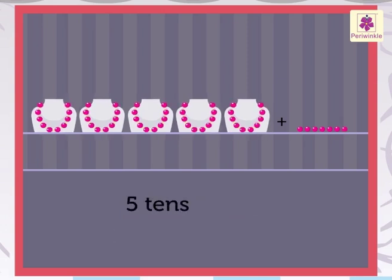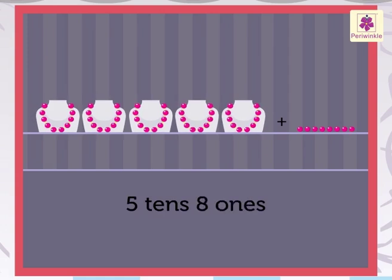Five tens and eight ones is 58. Five tens and nine ones is 59.